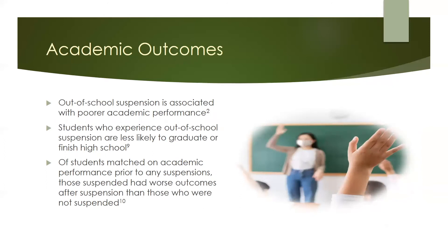Out-of-school suspension has a negative impact on academic outcomes. Students who are suspended tend to have poorer academic performance than those who are not, and this makes sense, as missing school tends to have a negative effect on academic performance. It was also found that students who are suspended are less likely to finish high school, and this connects to the bigger picture issue of school push-out, which we will discuss later. In addition, some studies have matched students who were suspended with students who were not suspended on their academic performance prior to the time of suspension. Among students who had similar academic achievement before they were suspended, those who were suspended out of school had poorer outcomes following the suspension. While that does not prove that suspension is the cause of the decline in academic outcomes, it does point to OSS as a strong possible cause.